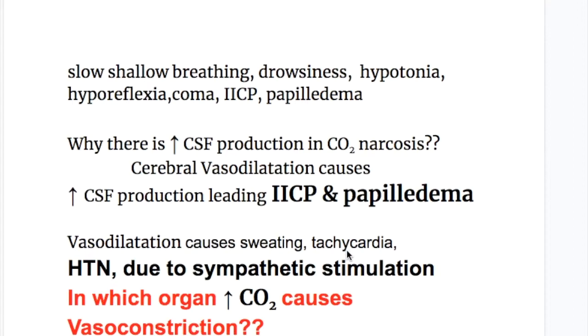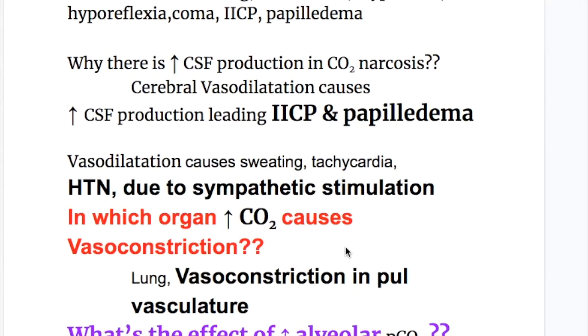Why is there increased CSF production in CO2 narcosis? Cerebral vasodilatation causes increased CSF production, leading to increased intracranial pressure and papilledema.